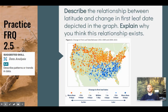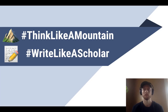Our practice FRQ for topic 2.5 involves the skill of describing trends or patterns in data. We have a map of the US showing the change in first leaf date for the honeysuckle plant — dark orange indicates eight days earlier than previously, dark blue indicates eight days later. Describe the relationship between latitude and the change in first leaf date depicted in this graph, then explain why you think this relationship exists.